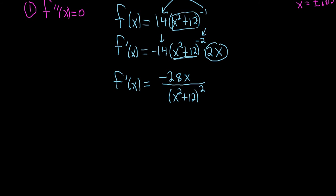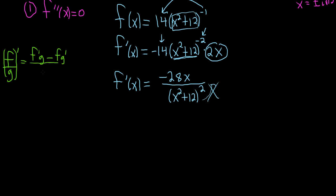Now we have to take the derivative again. This is a great example because now you have a 28x in the numerator — you could bring it up, but it's a terrible idea because we have to set this equal to 0 and solve, which would be much harder. It's easier to use the quotient rule. Recall: if you have f over g, the derivative is the derivative of the top times the bottom, minus the top times the derivative of the bottom, all over the bottom squared.